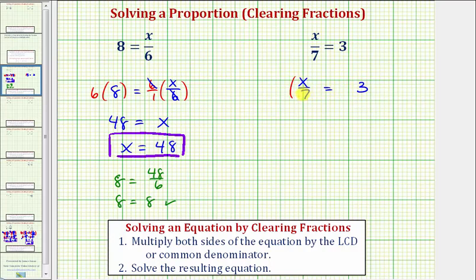So we'll write seven as seven over one on the left. And here, we'll just write seven times three. So simplifying here, seven divided by seven simplifies to one. One times x is x.